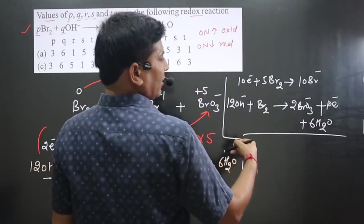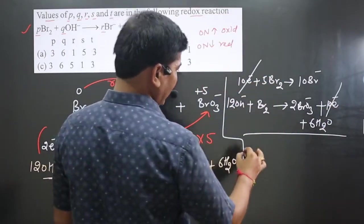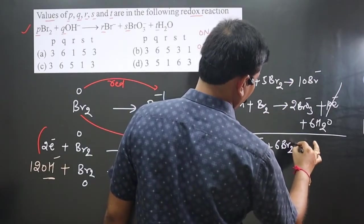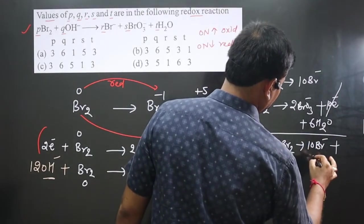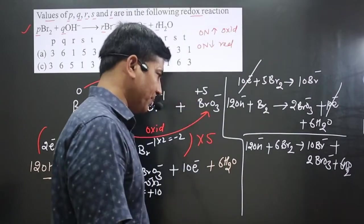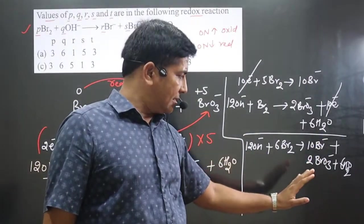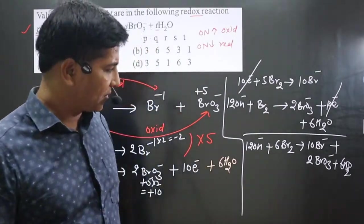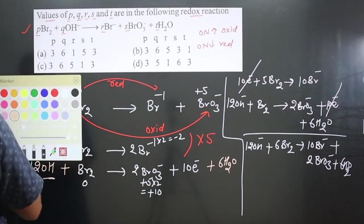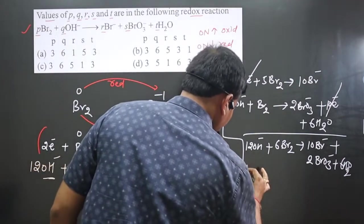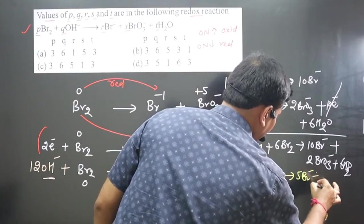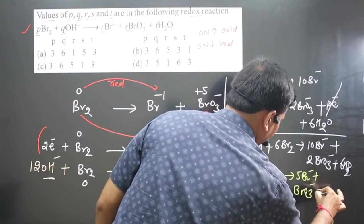Adding both half-equations: the 10 electrons on each side cancel out. We get: 12OH⁻ + 5Br₂ + Br₂ = 6Br₂ on the left side → 10Br⁻ + 2BrO₃⁻ + 6H₂O. Looking at this equation, we can divide the entire equation by 2 to get the simplest coefficients: 6OH⁻ + 3Br₂ → 5Br⁻ + BrO₃⁻ + 3H₂O.